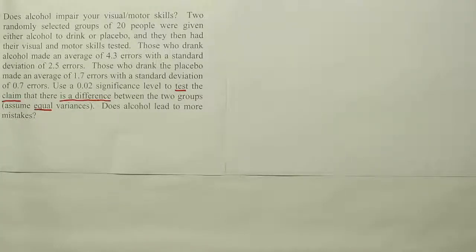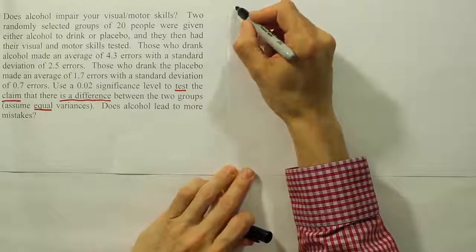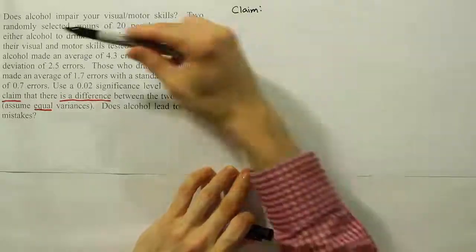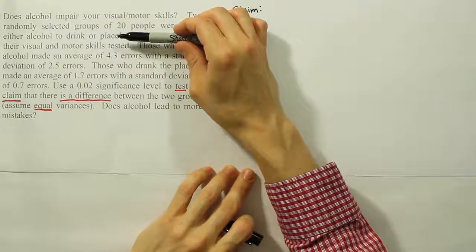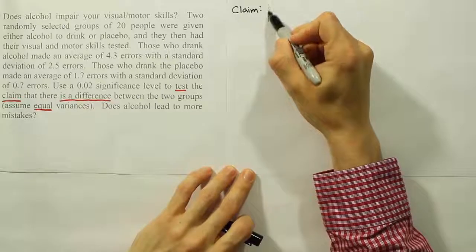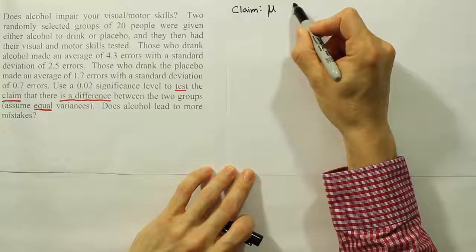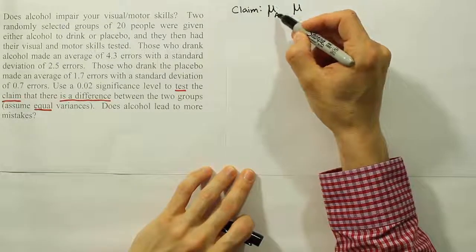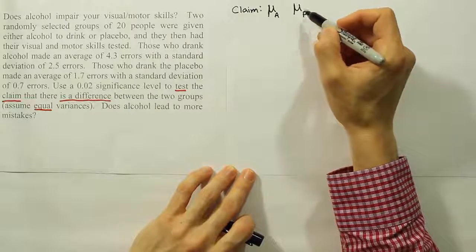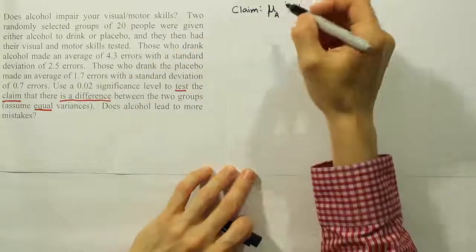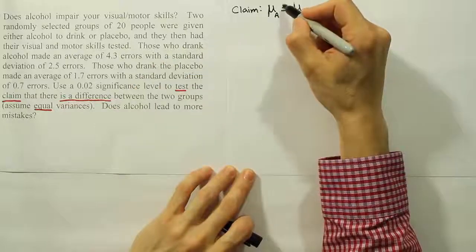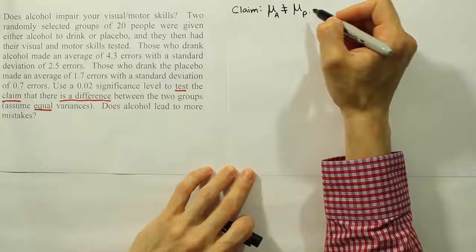Step one is to identify the claim and write it symbolically. This problem involves two groups: the alcohol group and the placebo group. Let μ_a represent the mean for the alcohol group and μ_p represent the mean for the placebo group. The claim is that there is a difference between them. An equal sign would mean they're the same, so to say there is a difference we write: μ_a ≠ μ_p. That not-equal-to sign is our claim.